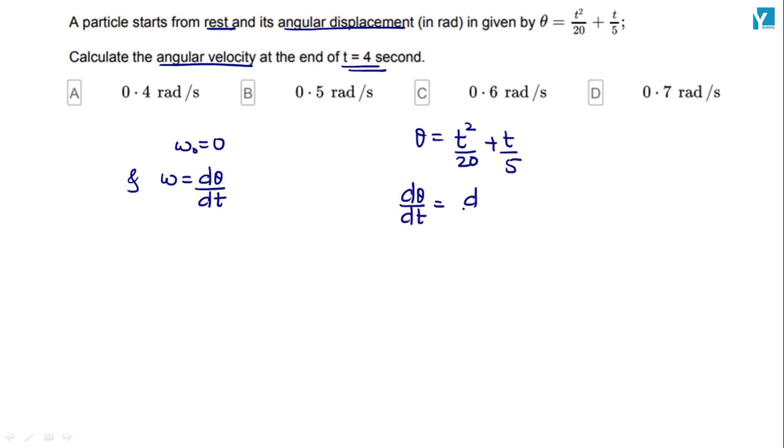T squared by 20 plus t by 5 equals theta. Taking the derivative, omega is equal to 1 by 20 into the derivative of t squared, which is 2t, plus 1 by 5 into the derivative of t, which is 1.